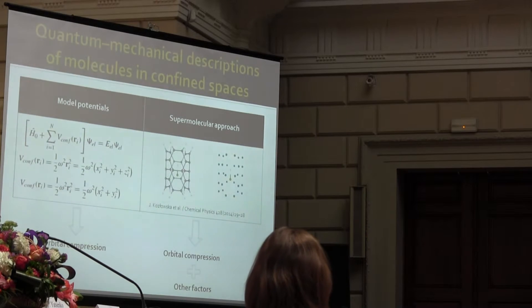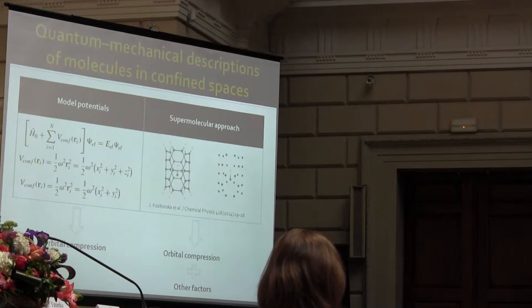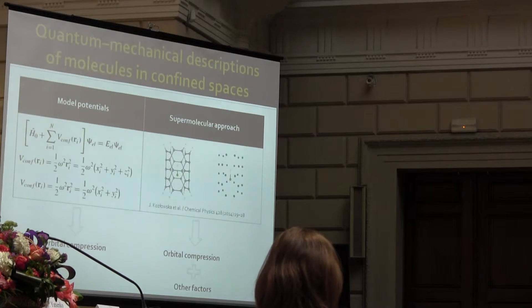In quantum chemistry, in order to model the effect of spatial confinement, we can use analytical external potential, which are applied in the form of one electron operator of an isolated system. Such approach accounts mainly for the short-range interaction effects, which are connected with Pauli exclusion, and this is the orbital compression effect.